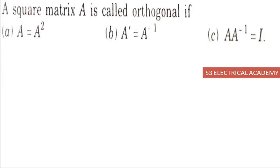Higher Engineering Mathematics, BS Grewal, multiple choice questions. A square matrix is said to be orthogonal. What is the condition for a matrix to be orthogonal?